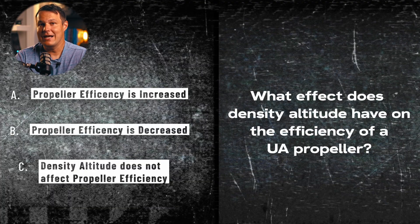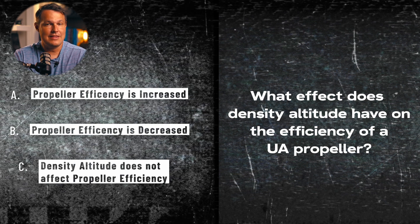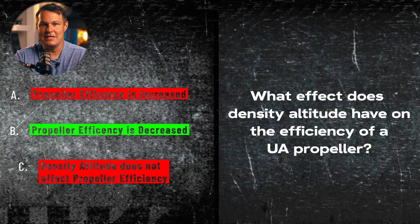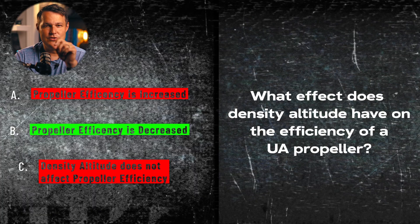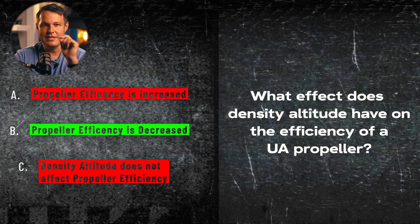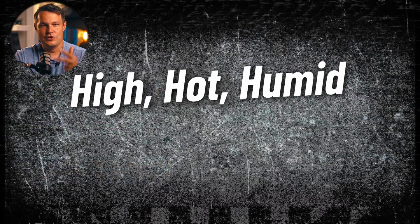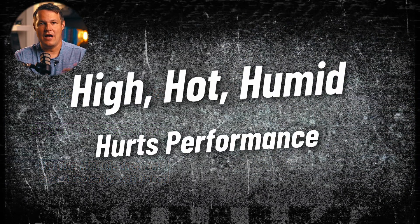At high density altitude, the air is thinner, and thinner air equals decreased propeller efficiency. So the correct answer is B — propeller efficiency is decreased. To help remember this: think of the H's. High, hot, or humid air hurts performance, and the opposite makes performance better.